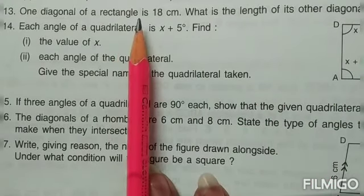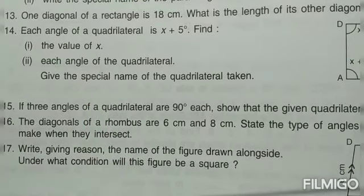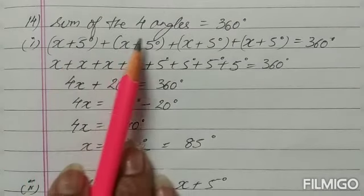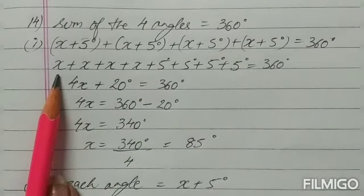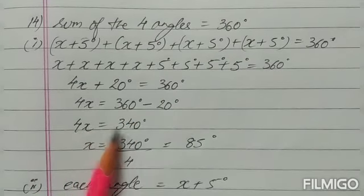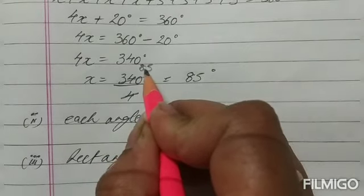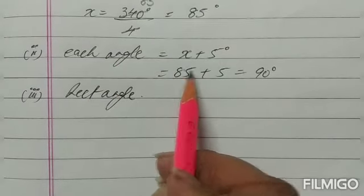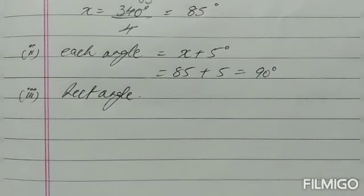Question number 14: each angle of a quadrilateral is X plus 5. Find the value of X and each angle. The sum of the four angles is 360, so four times (X plus 5) equals 360. Opening the brackets: 4X plus 20 equals 360, so 4X equals 340, giving X equals 85. Each angle is 85 plus 5, which is 90 degrees. Since all four angles are 90 degrees, the figure is a rectangle.